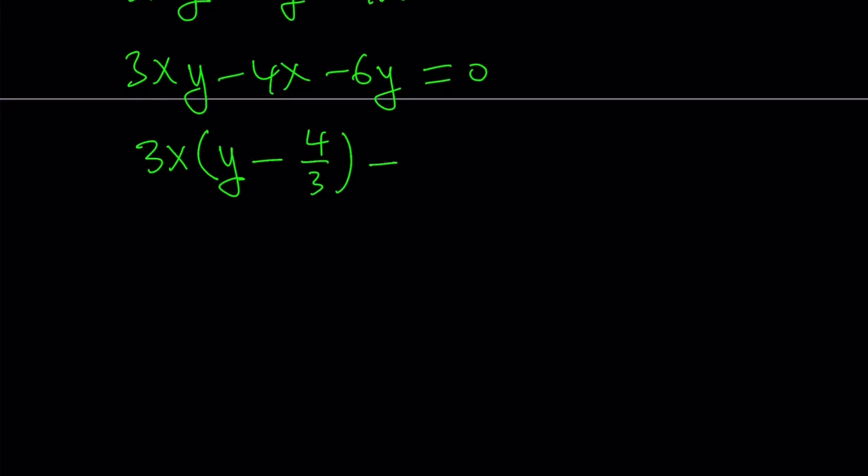And then I should be doing the same thing here but notice that we have a 6y. So if I take out a 6 I should be getting a y here. Since I'm going to use factoring by grouping, it makes sense if I'm able to subtract 4 thirds from y. So the question here is, what should I add to both sides to make it factorable? That should be a 4 thirds.